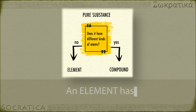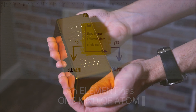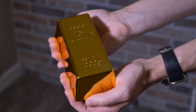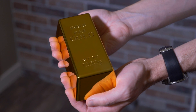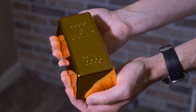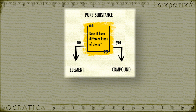An element is composed of just one kind of atom, like a gold bar—it's pure gold all the way through, made up only of gold atoms. Elements cannot be separated into simpler substances.